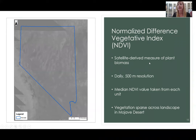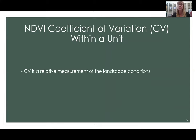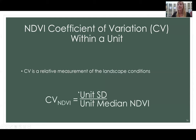We masked these polygons over an NDVI raster to measure plant biomass within them. NDVI is a satellite-derived measure of plant biomass; our data is daily at 500-meter resolution, and we took the daily median value from all pixels inside each polygon. Since vegetation is so sparse in the Mojave Desert and intermixed with barren ground, instead of using raw NDVI measurements within a patch, we measured the coefficient of variation within a unit — defined as standard deviation over median NDVI — as a relative measurement of landscape variability.